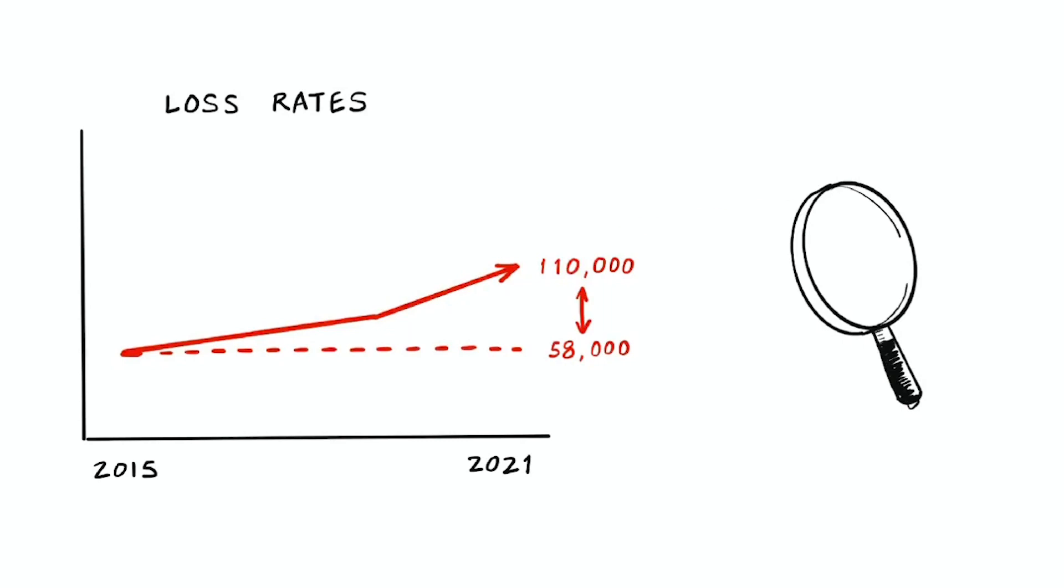The numbers of colonies lost to suspected starvation, wasp attacks, and queen problems don't fluctuate much year on year. However, losses from varroa are really starting to impact. These losses have increased every year since the survey began, and in 2021,